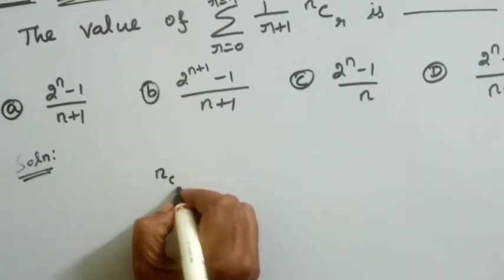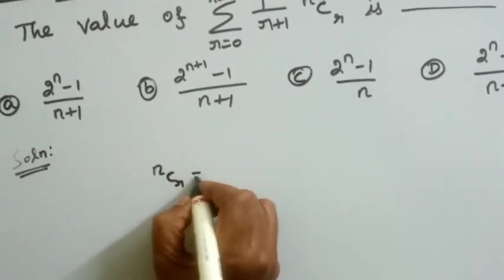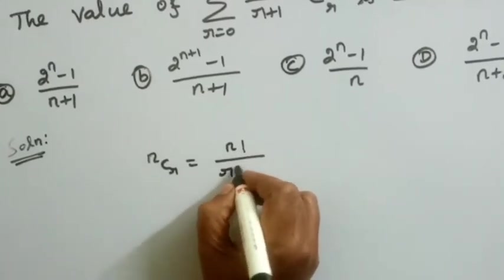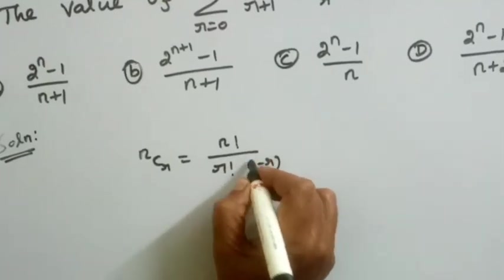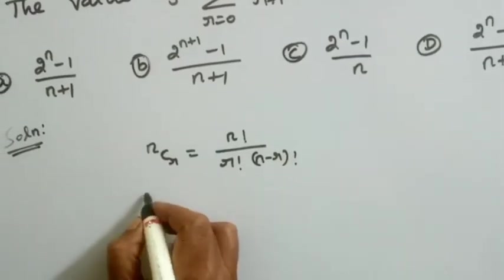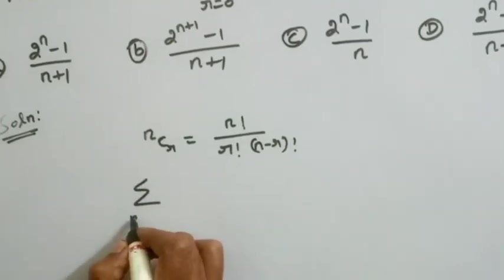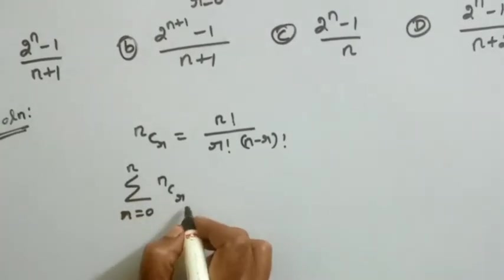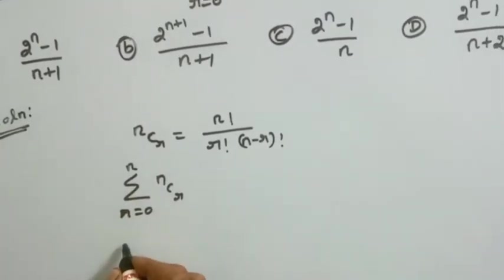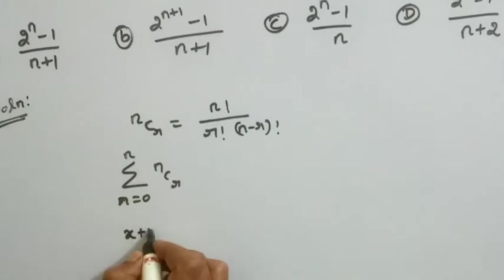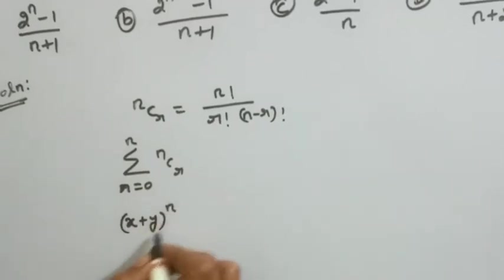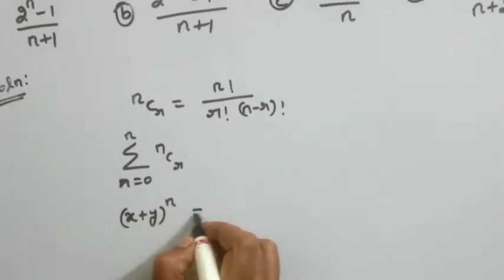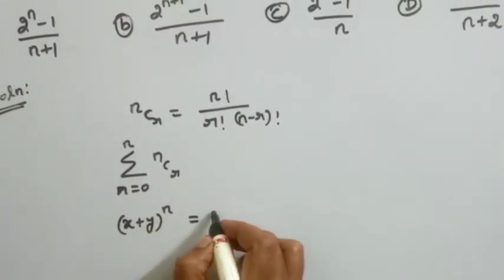The first formula is NCR. The NCR formula is n factorial divided by R factorial into N minus R factorial. The second formula is the summation R equal to 0 to N of NCR, which relates to the binomial series expansion of X plus Y to the whole power N.